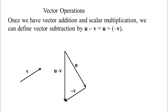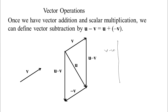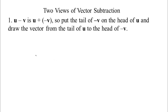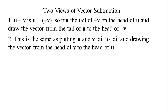There's another way to do vector subtraction that's also handy. Instead of flipping v, put u and v tail to tail. Then draw the arrow that starts at the head of the vector you're subtracting (v) and goes to the head of the vector you're subtracting from (u) — that gives you u minus v. If you wanted v minus u, you'd go in the opposite direction, starting at the head of u and going to the head of v. Both methods give the same result.